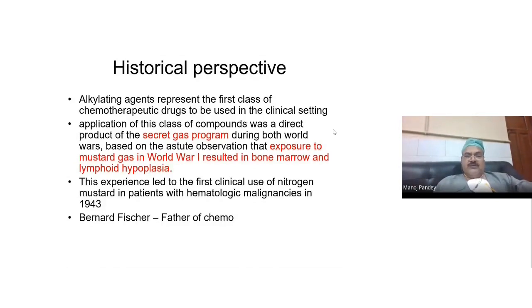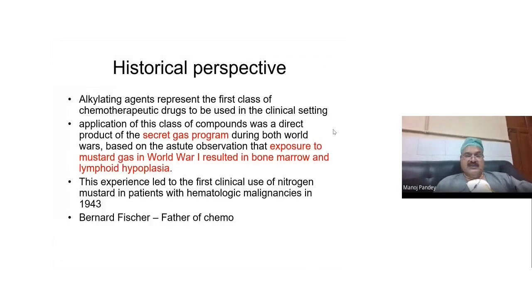During World War I and World War II, people were working on various gases, and one of the gases used was Nitrogen Mustard. It was seen that when people were exposed to Nitrogen Mustard, they had suppression of bone marrow and lymphoid hypoplasia. This led scientists to think that if a gas is suppressing the bone marrow and causing lymphoid hypoplasia, it could be used for the treatment of blood cancers. That is how, in 1943, when the war was ending, Nitrogen Mustard was used for hematological malignancies.